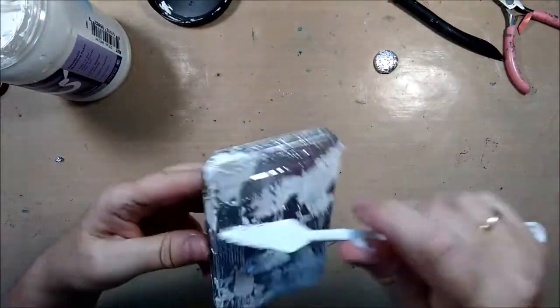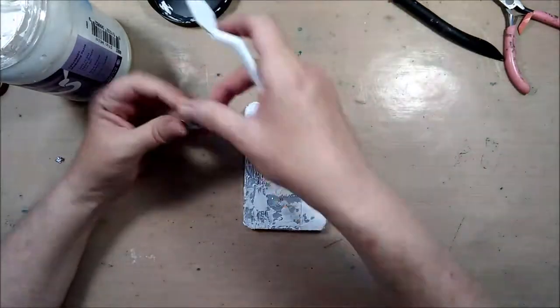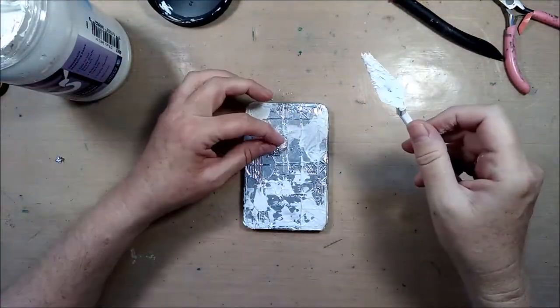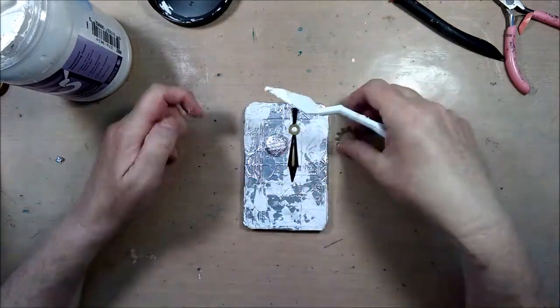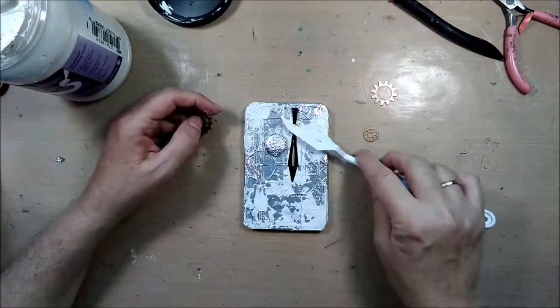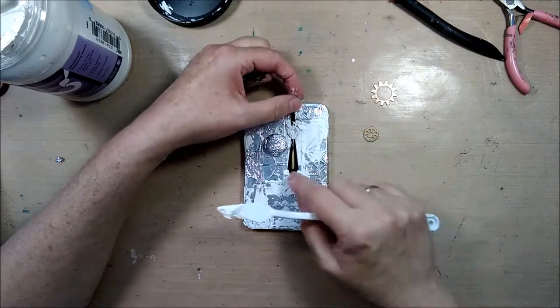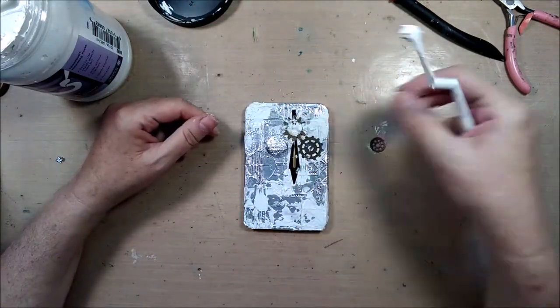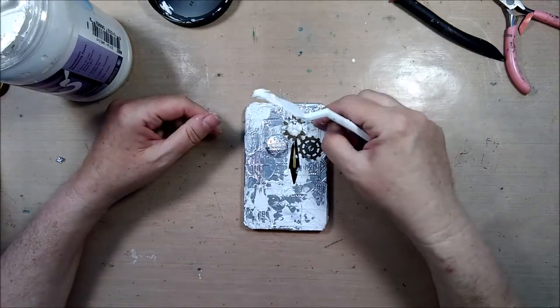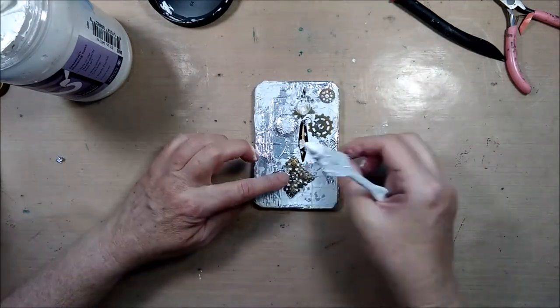Now I'm using it also as a glue, first for my button. And then I decided on this hour hand from an old alarm clock and three gears. One I add to the very top so it has a little distance between the tin and the gear, and the two others right next to it.